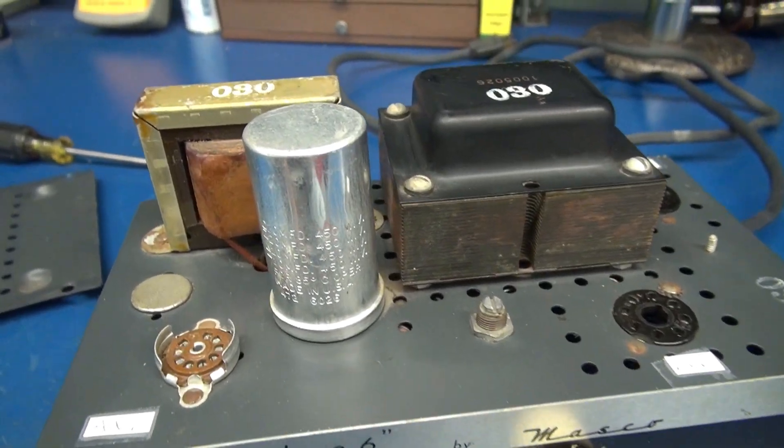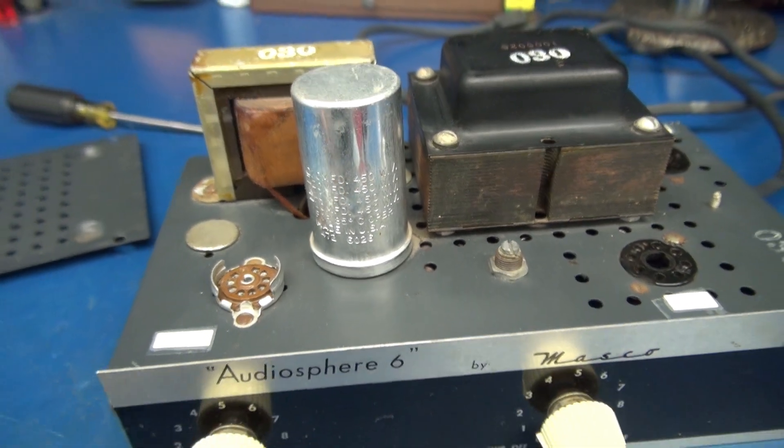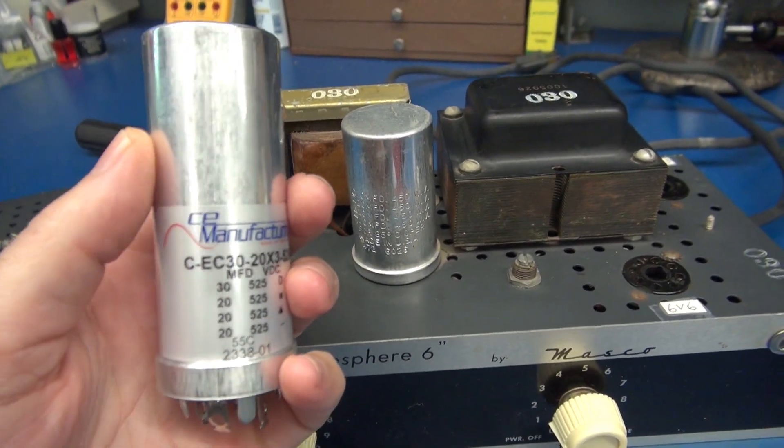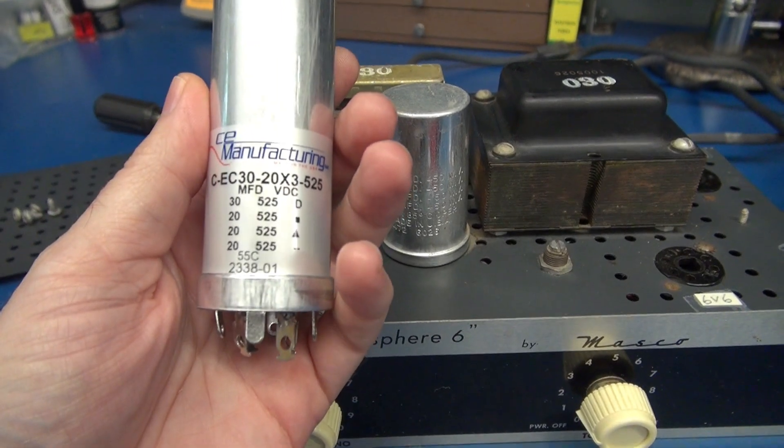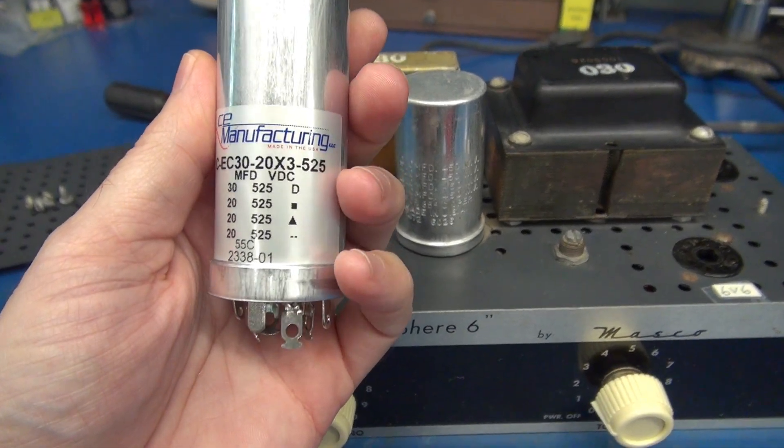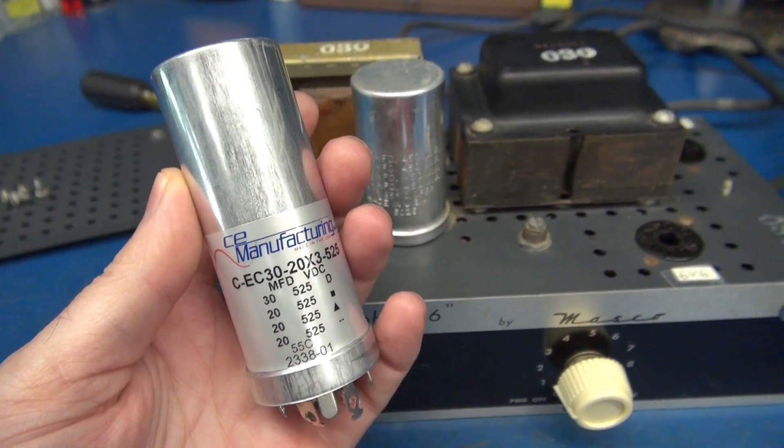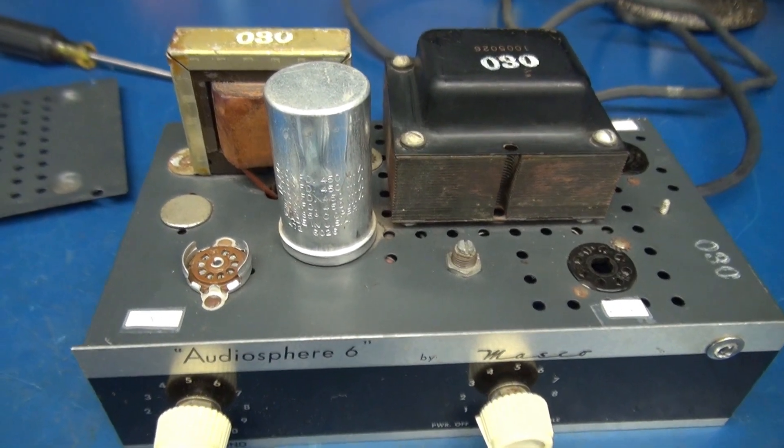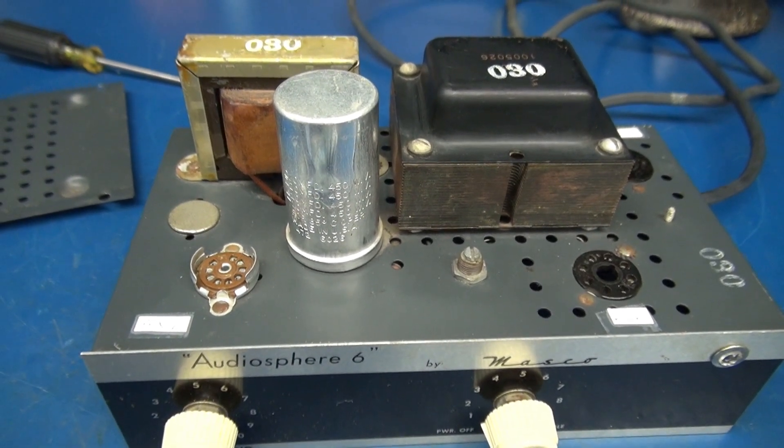So I'm going to start by changing out the main filter capacitor. I'm going to replace it with this really nice CE manufacturing cap, 30 and 30-20 rated at 525 volts. And I'll change out those two stand-alone blue caps and we'll apply power and see if we can get anything through the amp.